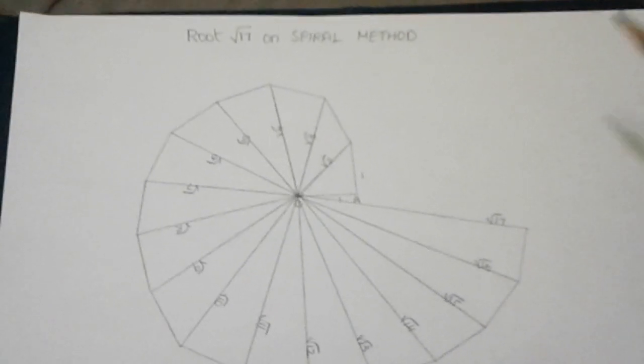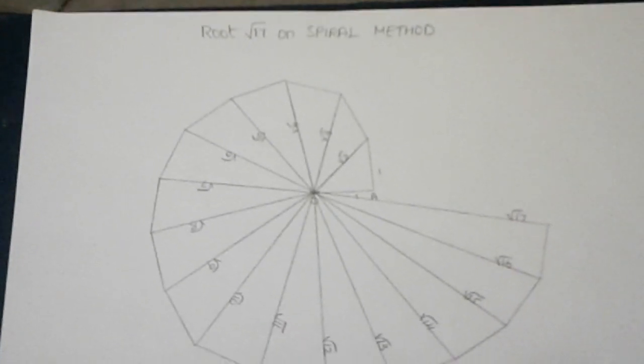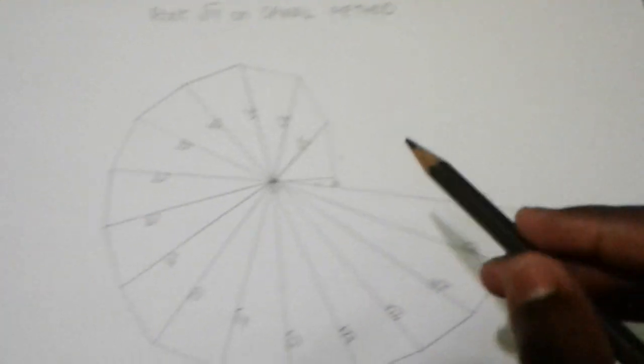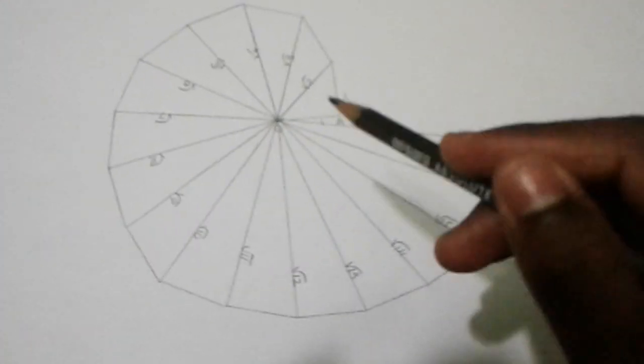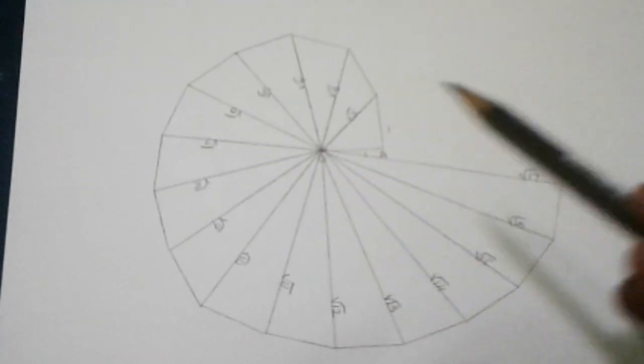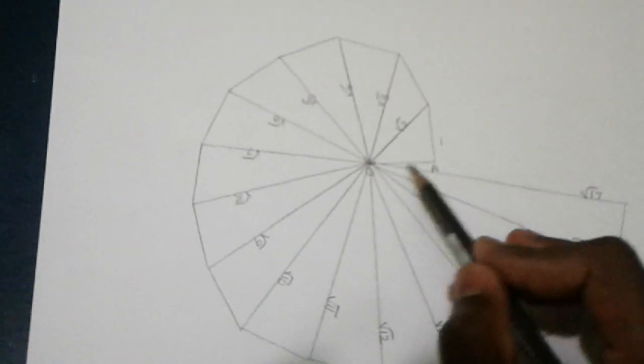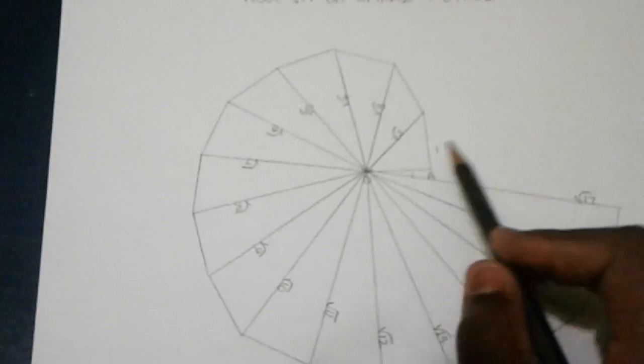Today we are going to see how to construct root 17 using the spiral method. Here I had already drawn root 17, so I'm going to show how to draw this. Draw a line OA and make it one unit, that is one inch. Again, with O as center, draw another one unit.